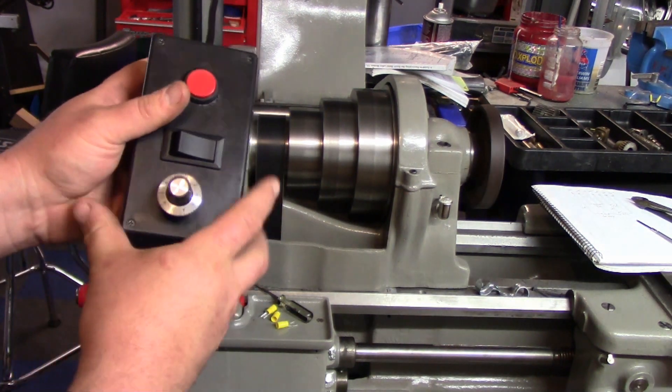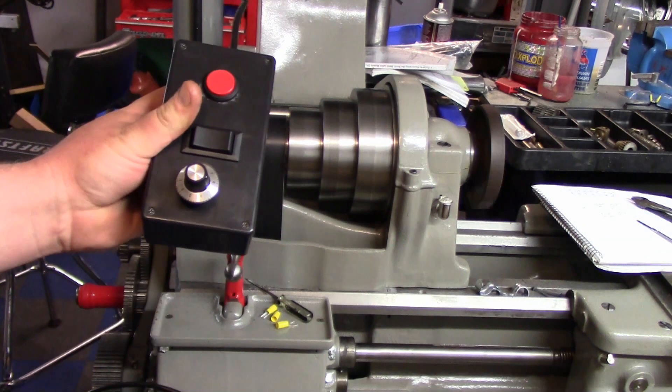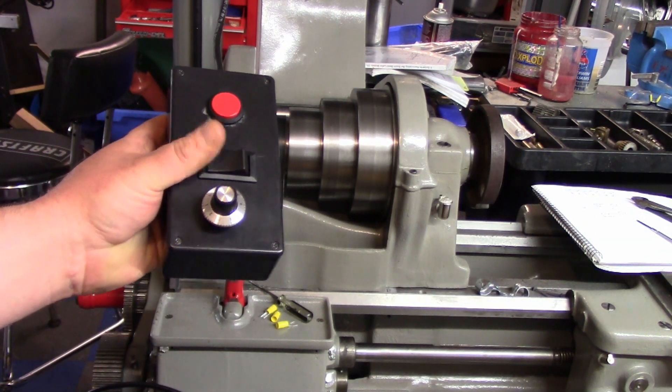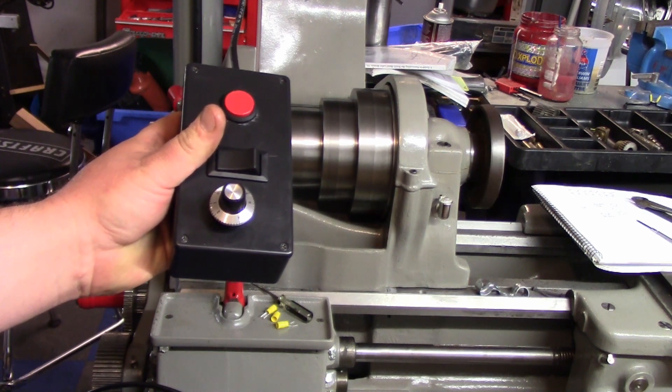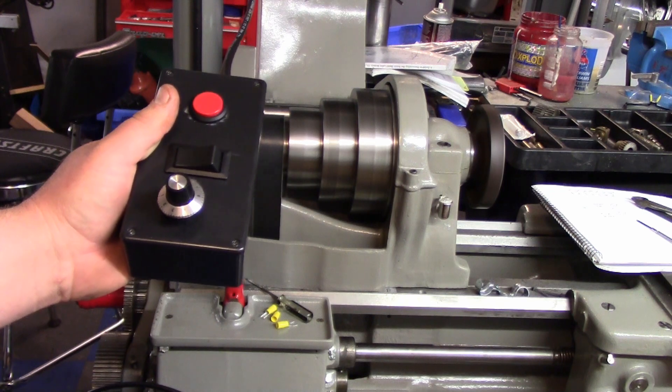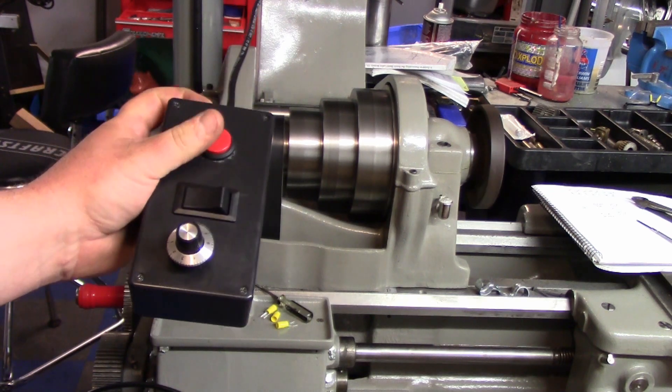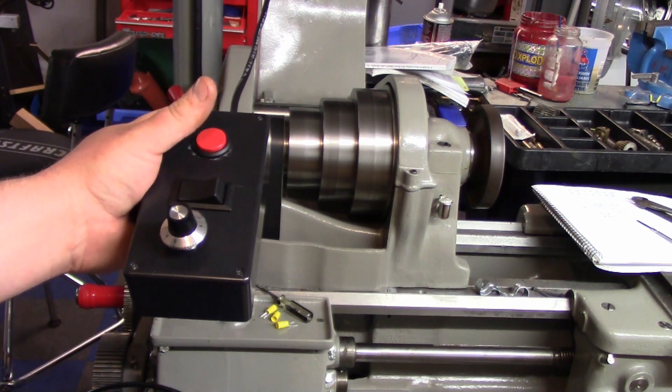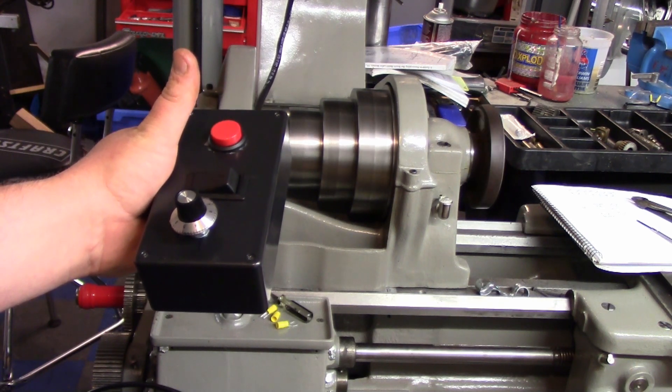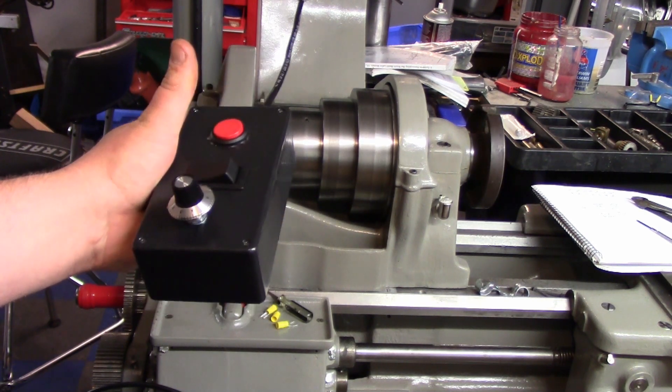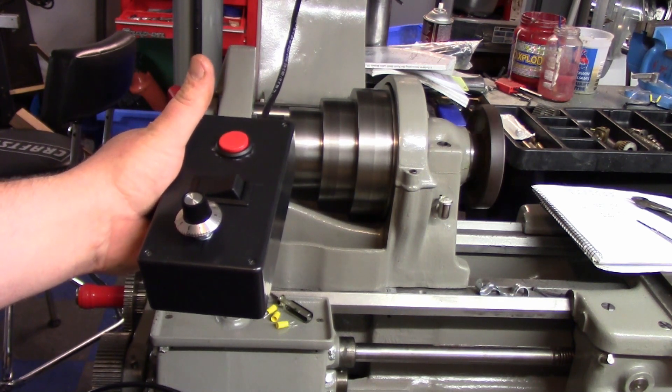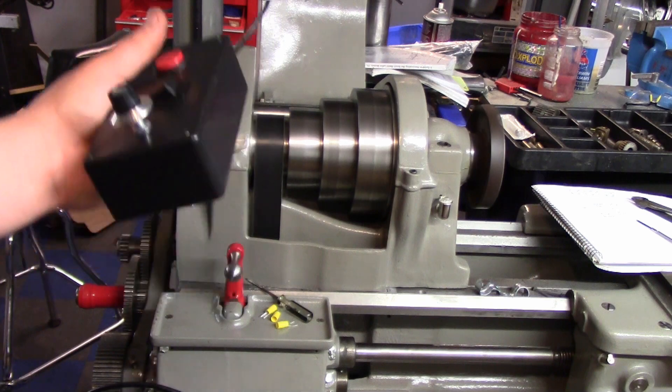Here's my main button, so it should be forward. Now if I click this in the center position, it should shut off. And then click it to the left and it should reverse. Now I could also shut it off with this red button.